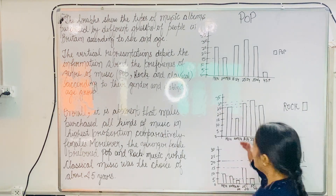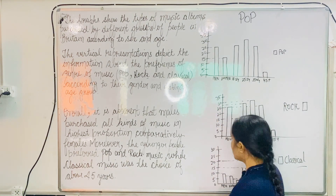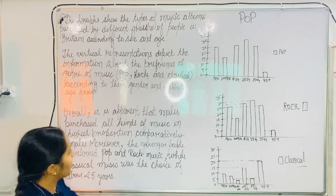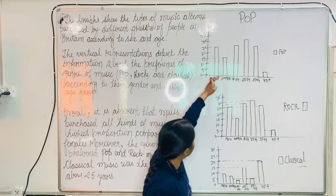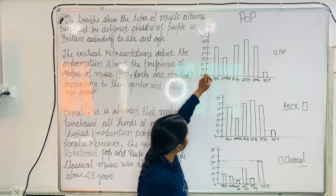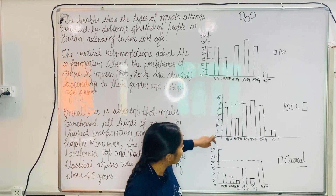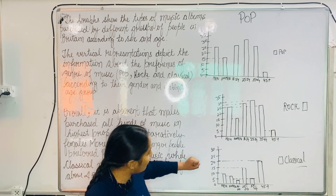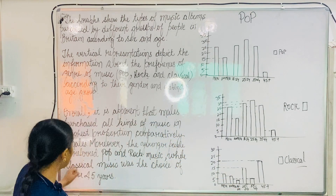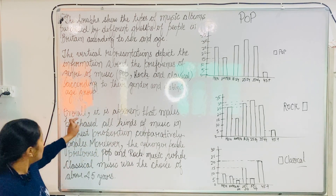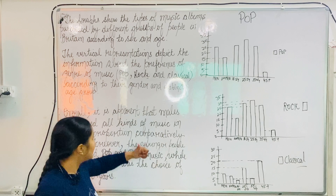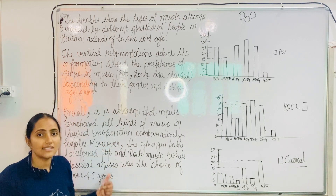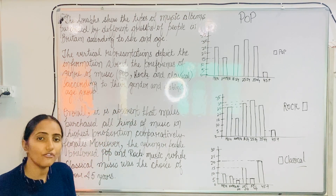Let us move towards the overall. So, what is clear overall? Looking at the graphs, men liked pop music the most, they also liked rock music most in comparison to women, and they liked classical also. So the first overall point: it is apparent that males purchased all kinds of music in the highest proportion, meaning males are more interested in all kinds of music.